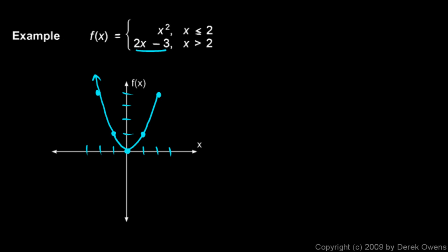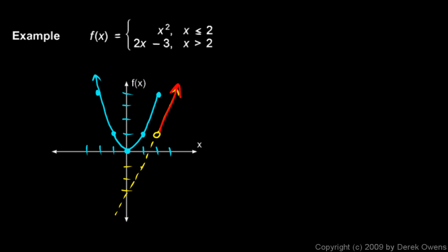Then it's the function 2x − 3 when x > 2. This is a line with a y-intercept of -3 and a slope of 2. We put an open circle at x = 2 on this line because the function doesn't exist there for this piece. If you draw the whole line, make it dashed below x = 2 since the function only exists for x > 2. So the graph is the parabola stopping at (2, 4), and then this ray going upward to the right.